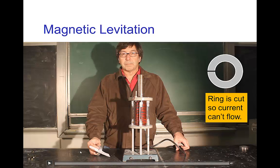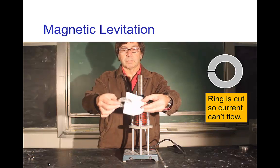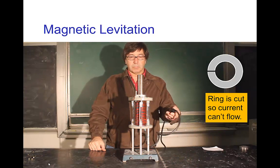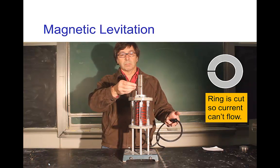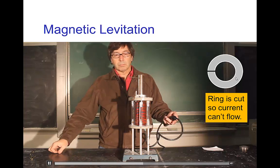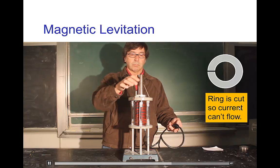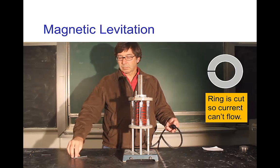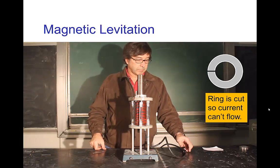One way to realize that there's a current and that it's necessary is that if I take a similar ring but with a slice taken out of it — so it has a cut — I turn on the AC electromagnet and nothing happens, because I can't get a current flowing around it because there's a gap in the ring. Notice this AC electromagnet — because the magnetic field is fluctuating, it's not as powerful as a standard electromagnet.